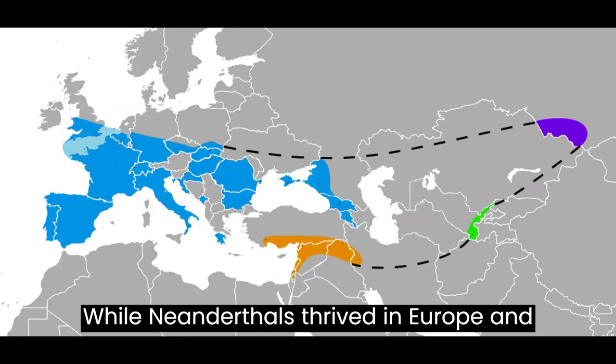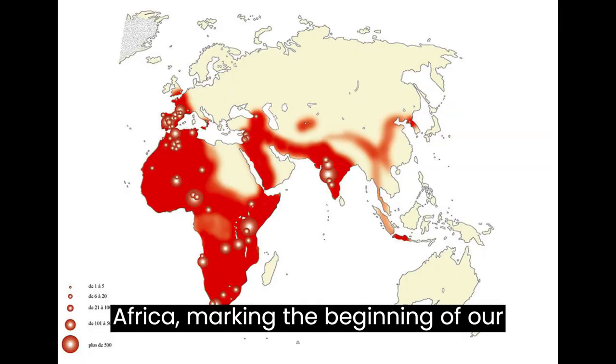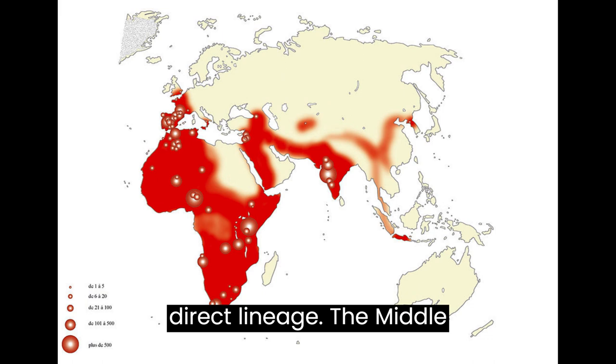While Neanderthals thrived in Europe and parts of Asia, Homo sapiens emerged in Africa, marking the beginning of our direct lineage.